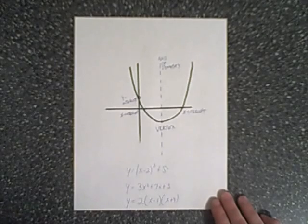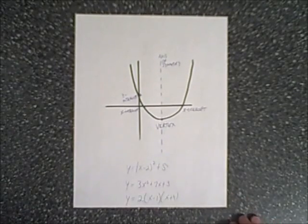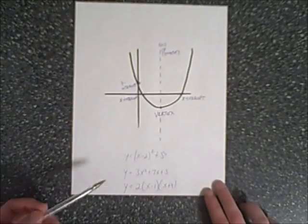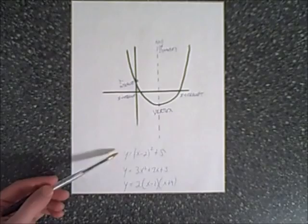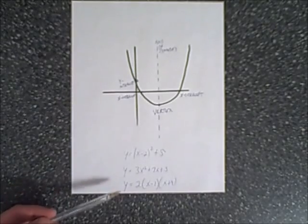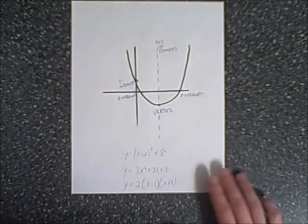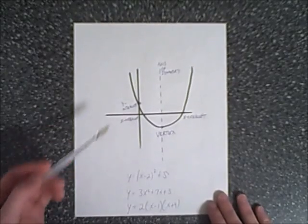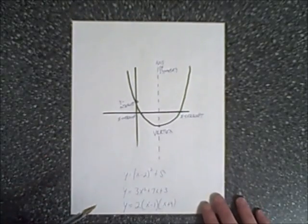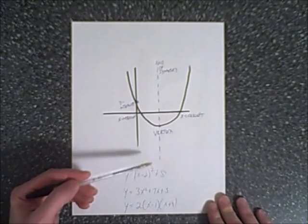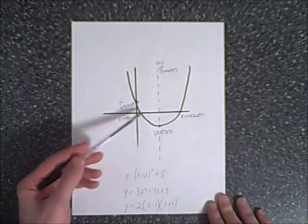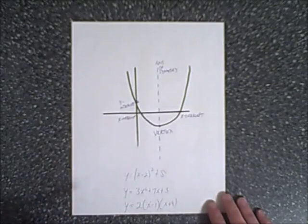At this point, you've probably worked with quadratics and you're quite familiar with taking a quadratic equation and graphing it. Here are three examples. This one's in vertex form, this one's in standard form, this one's in intercept form. You're able to figure out what the axis of symmetry is, the vertex, the x-intercepts, and the y-intercepts.